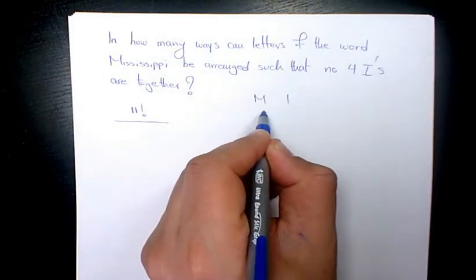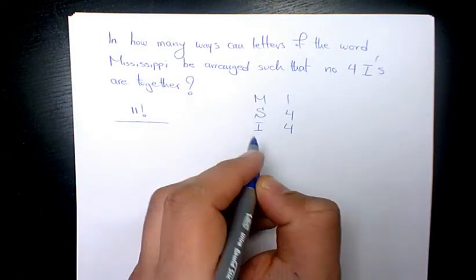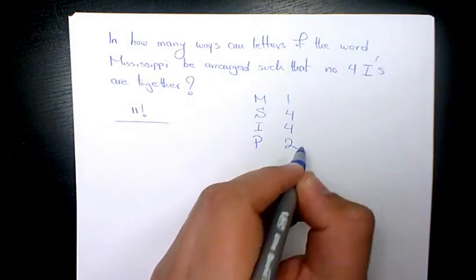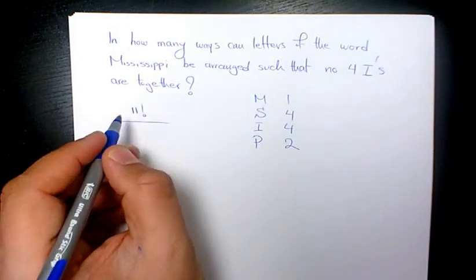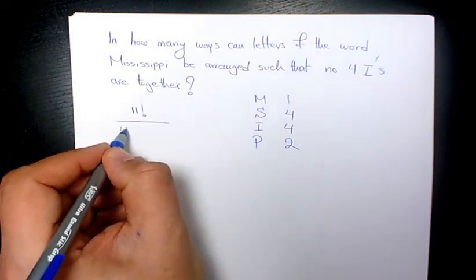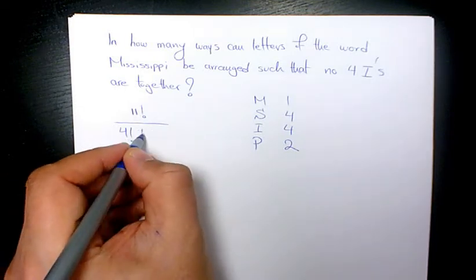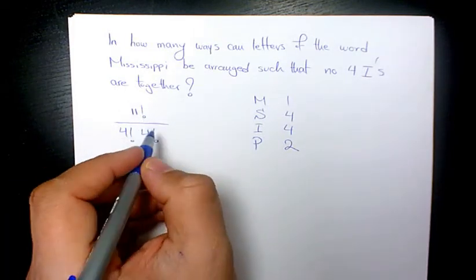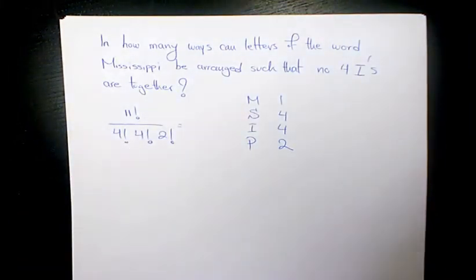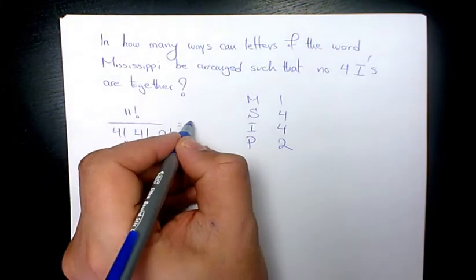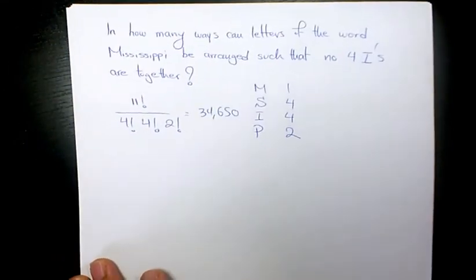M is repeating once, S is repeating four times, I four times, P two times. And then I divide 11 factorial by four factorial because S is repeating four times, I repeating four times, so four factorial and two factorial for P. And when you calculate it, that's going to be 34,650 different ways.